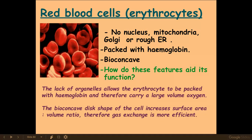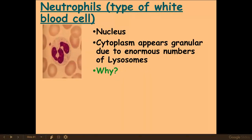The next cell is a neutrophil, which is a type of white blood cell. It has a lobed nucleus — that terminology is directly from the mark scheme. The cytoplasm appears to have a granular look, and that is due to the enormous number of lysosomes present within the neutrophil.